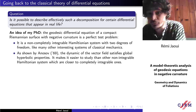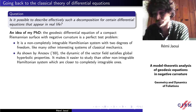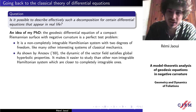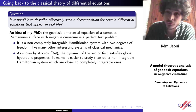Why is this an interesting problem? First, it's a good approximation of a differential equation that appears in real life, because it's a non-completely integrable Hamiltonian system with two degrees of freedom, like many other interesting systems in classical mechanics. Second, we have a very good understanding of the dynamics of the vector field. It satisfies global hyperbolic properties, making it easier to study than non-integrable Hamiltonian systems closer to completely integrable ones. Third, this differential equation has many historical roots.